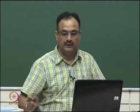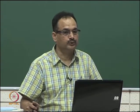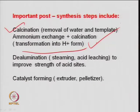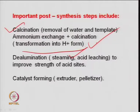De-alumination is done sometimes - higher silicon-to-aluminum ratio in the zeolite framework provides strength to the acid site. De-alumination is generally done with mild acid treatments, such as very dilute sulfuric acid, that leaches out some aluminum from the framework, increasing the silicon-to-aluminum ratio. This can also be done by steaming - acid leaching or steaming can be done to improve the strength of the acid site, and that process is known as de-alumination.